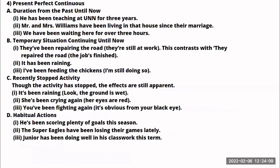Let's now talk about the present perfect continuous. You can use it to talk about duration from the past until now — something that started in the past and has been going on until now. For example: 'He has been teaching at UNN for three years' — this shows he is probably still teaching there up until this moment. Another example: 'Mr. and Mrs. Williams have been living in that house since they got married' — since they got married, they have been in that house.